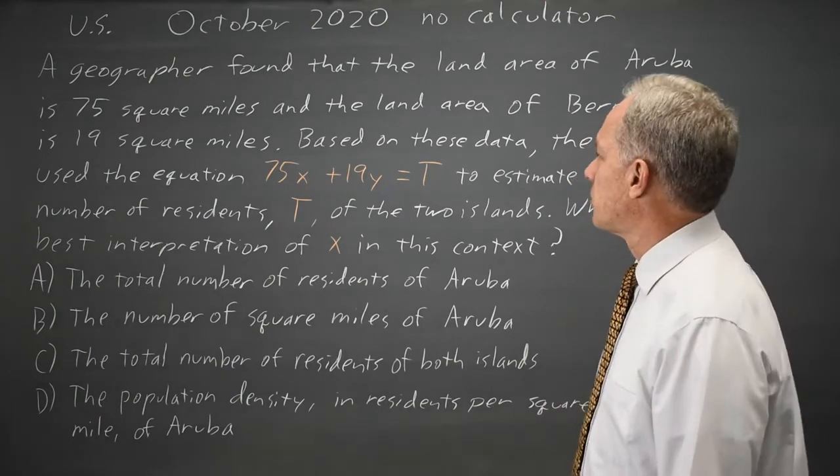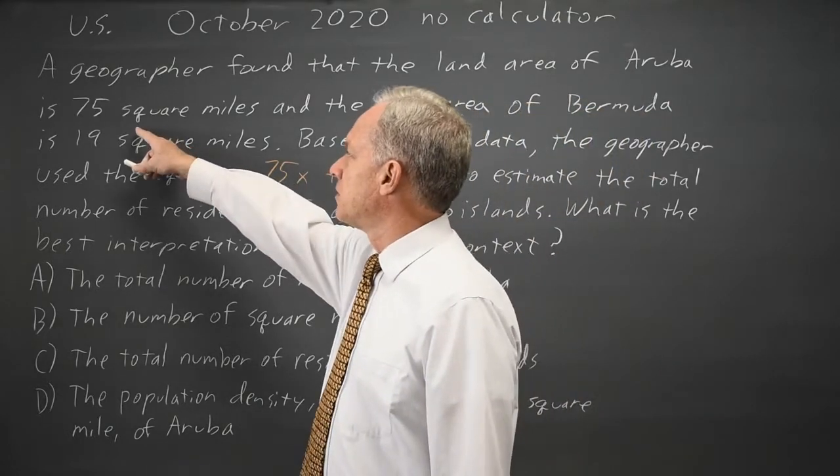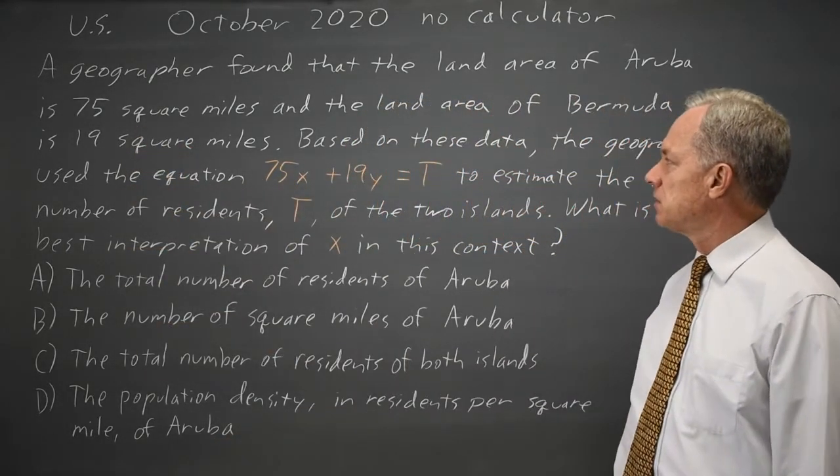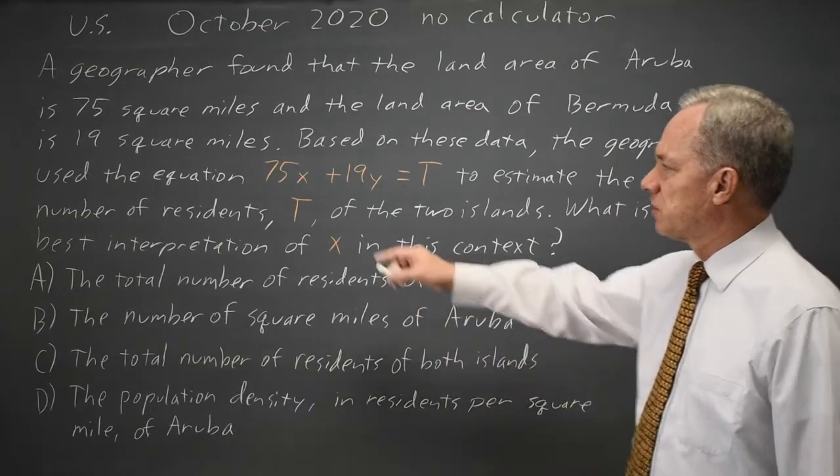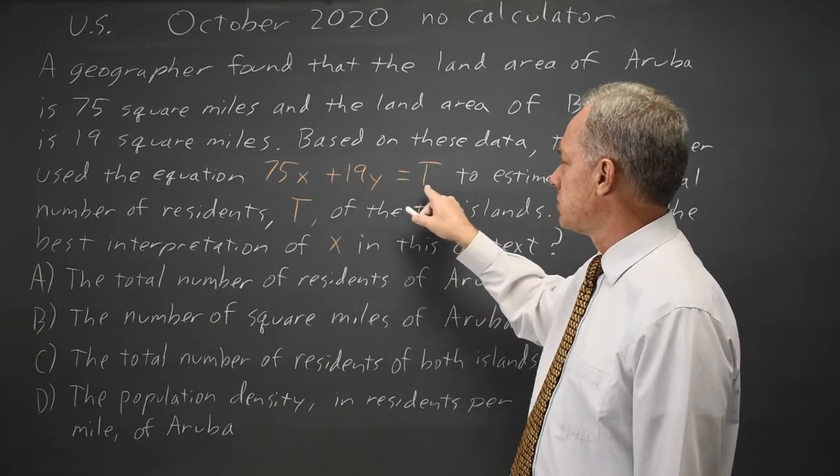The College Board gives us a paragraph about land area, where the land area of Aruba is 75 square miles, the land area of Bermuda is 19 square miles, and a geographer uses the equation 75x + 19y = t,